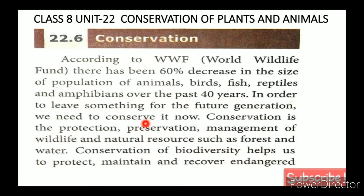According to WWF - World Wildlife Fund - there has been a 60% decrease in the population size of animals, birds, fish, reptiles, and amphibians over the past 40 years. Amphibians live both on land and in water - for example, frogs. In order to leave something for future generations, we need to conserve it now.